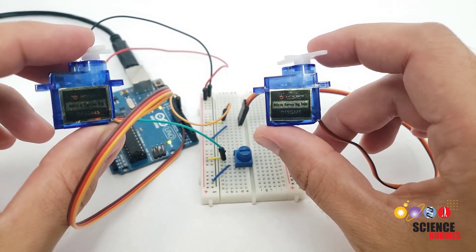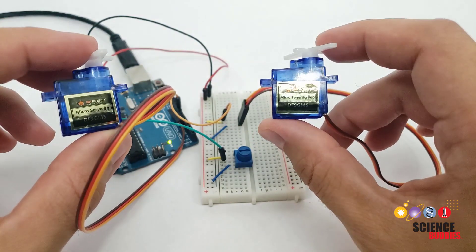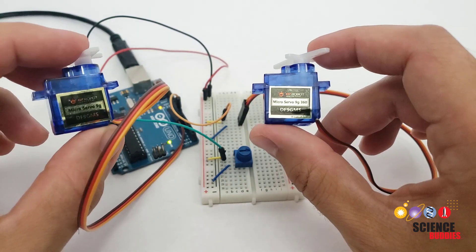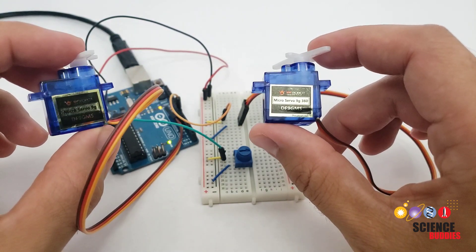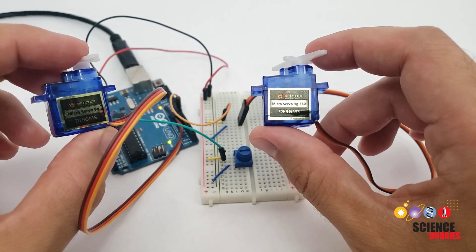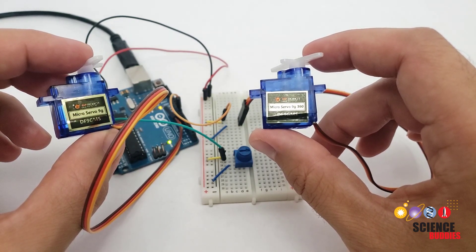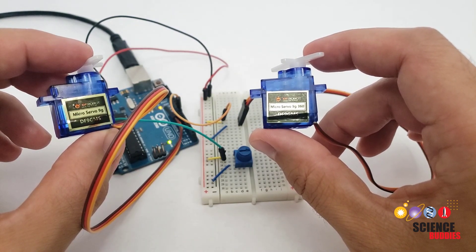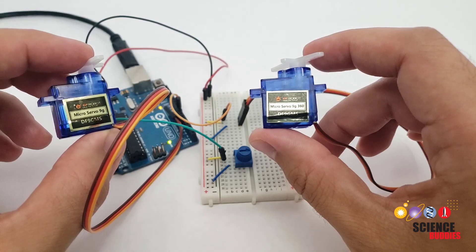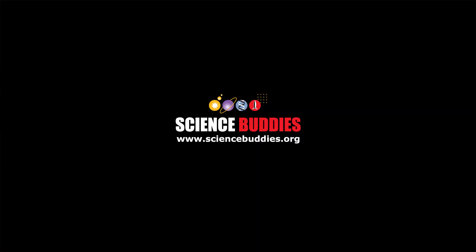Hopefully this video has helped you understand the difference between positional and continuous rotation servo motors, how you can control them with an Arduino, and which kind you might need for your project. For many more electronics and Arduino projects, as well as thousands of other hands-on science and engineering projects, check out our YouTube channel and visit us online at www.sciencebuddies.org.